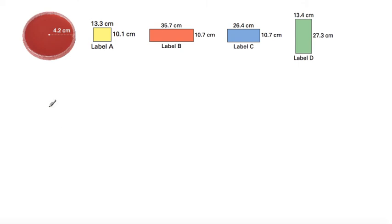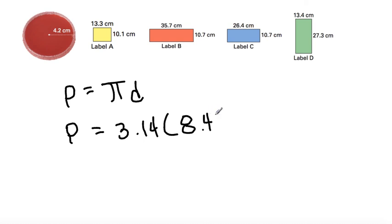So let's plot this out. Perimeter equals P equals pi times the diameter. That's what I like to use because it's easy. So perimeter equals pi, 3.14 times the diameter. The diameter 4.2 times 2 is 8.4.